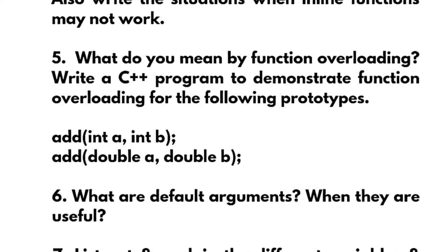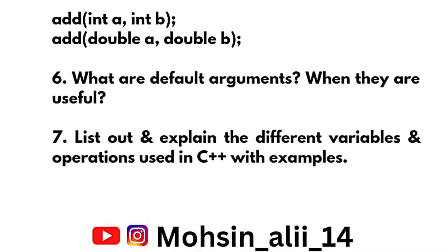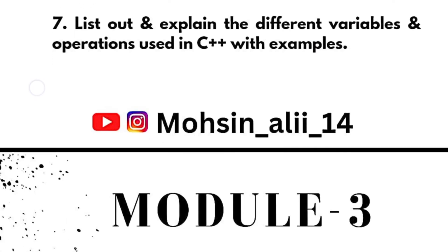Like these are given over here, that is add integer a, integer b, add double a and double b. What are default arguments? When they are useful? List out and explain the different variables and operations used in C++ with examples.